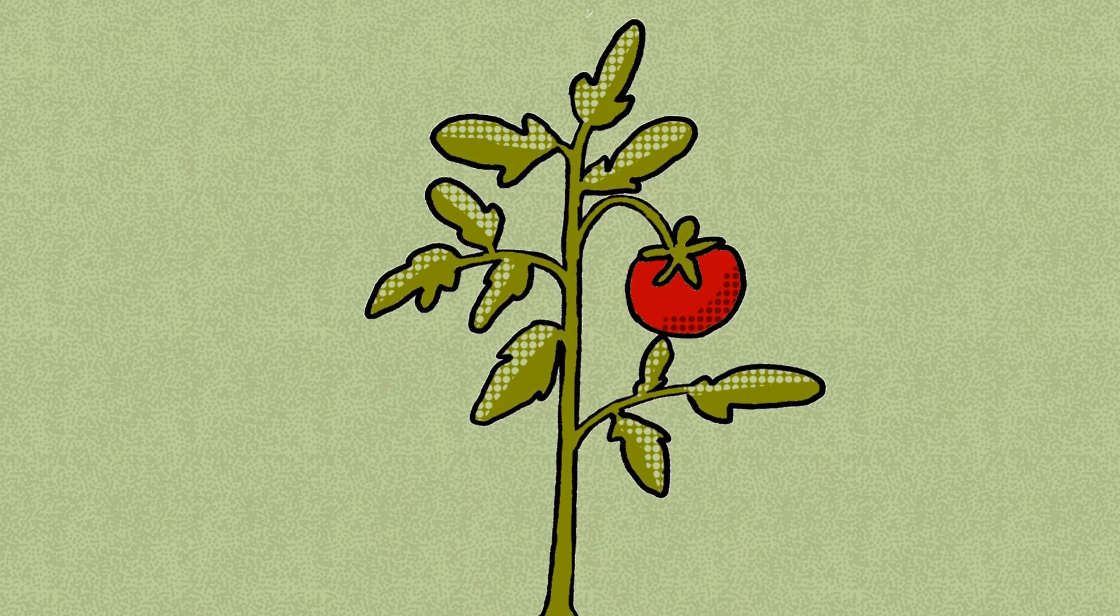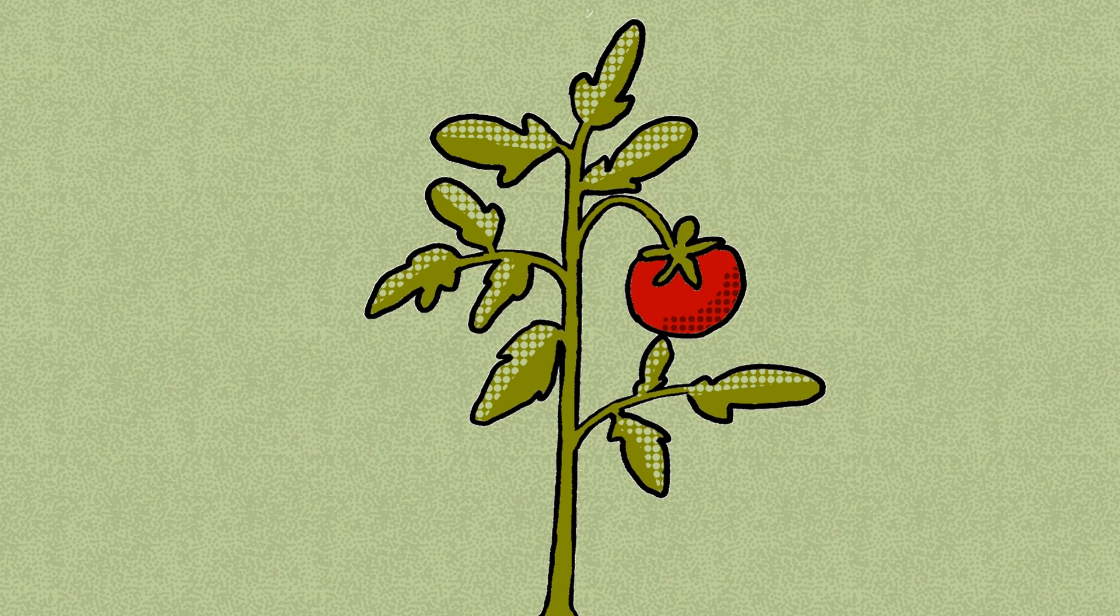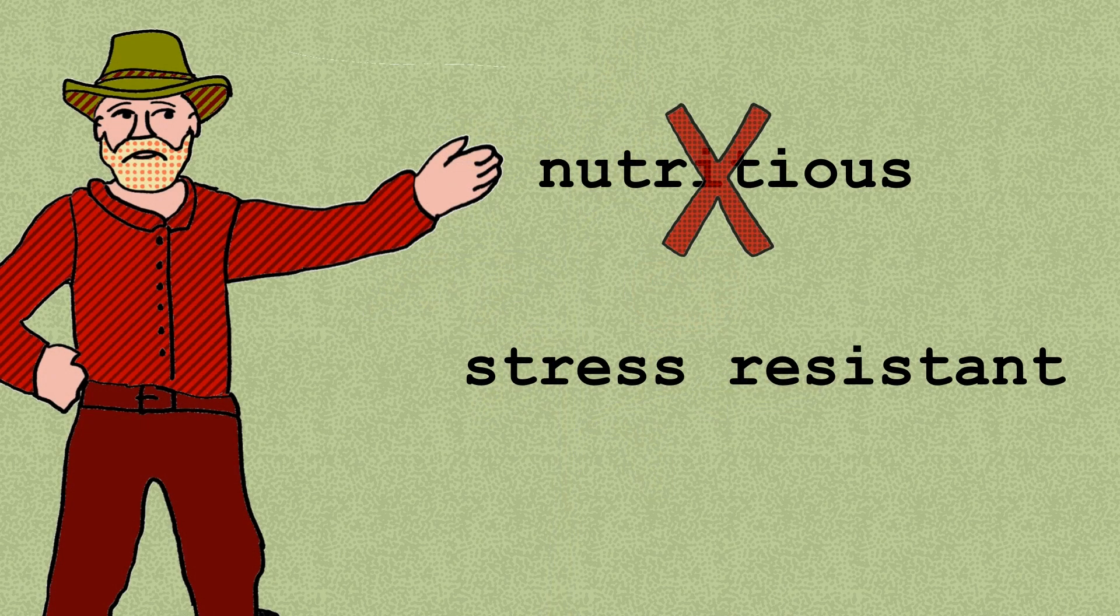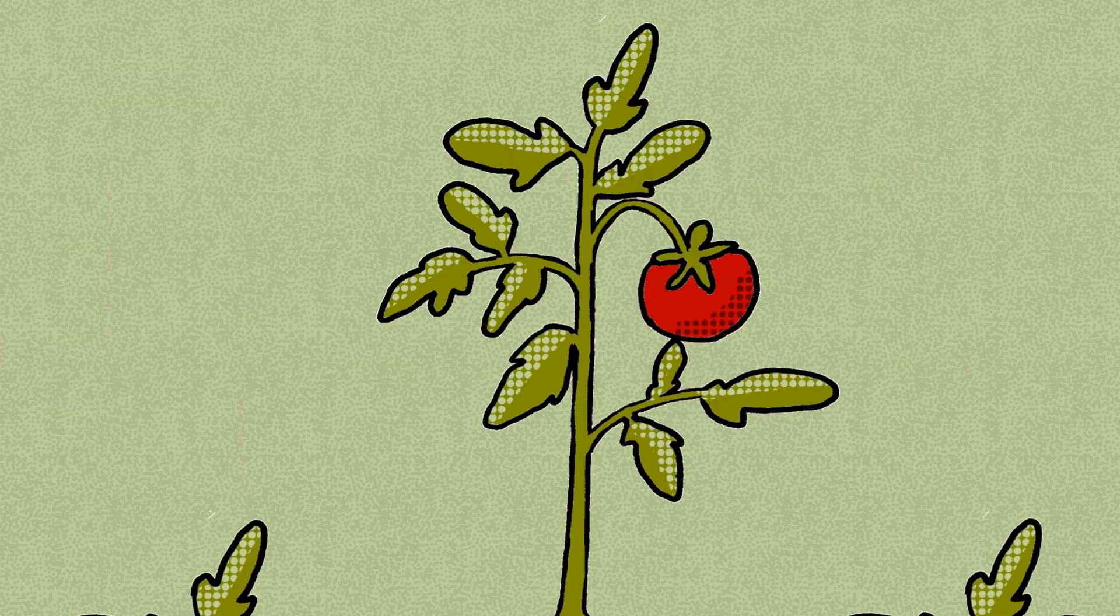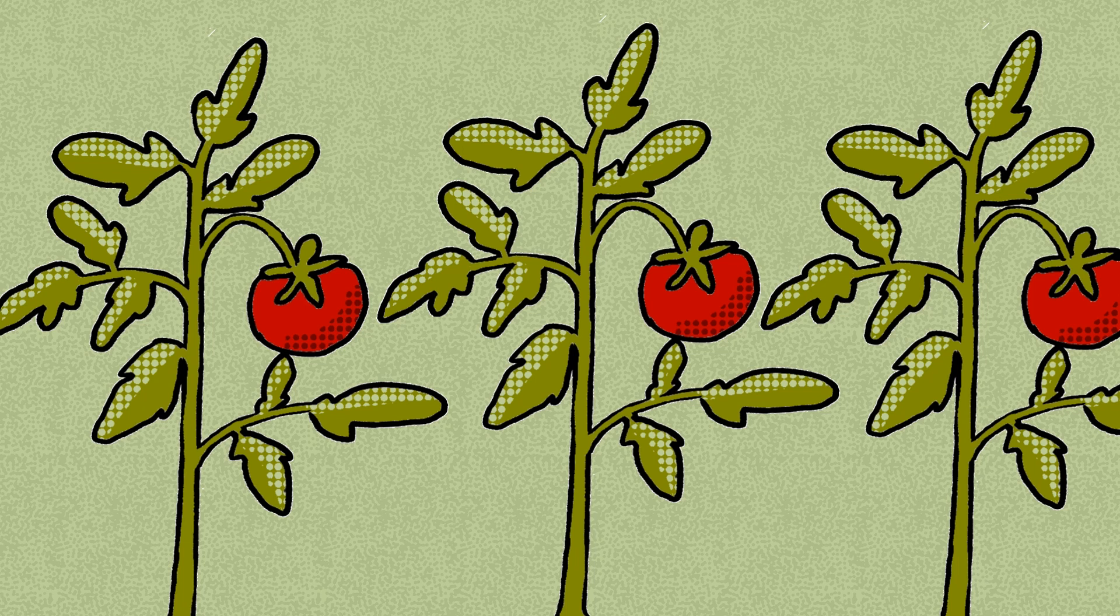But in the pursuit of yield, they also lost things. They could only select for traits they could easily see, so they inadvertently bred crops that were less nutritious and less stress-resistant. Also, by allowing only the very best crops in each generation to reproduce, they lost genetic diversity.